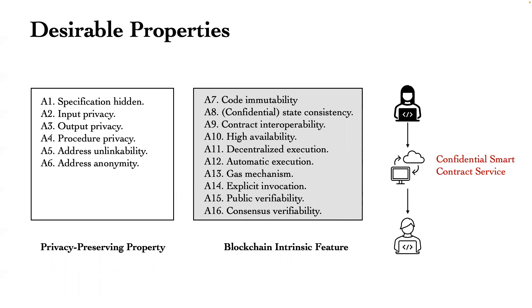Here we present our identified desirable properties. We evaluate TEE-assisted confidential smart contract systems from two aspects: privacy-preserving properties and blockchain intrinsic features. The privacy-preserving properties include specification, hidden input-output privacy, procedure privacy, and address linkability and anonymity. The blockchain intrinsic features contain immutability, consistency, interoperability, availability, decentralization, automation, and some specific mechanisms.